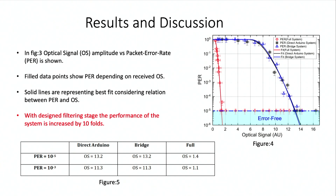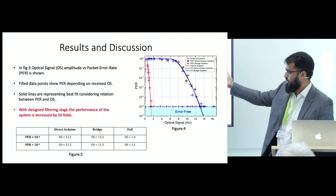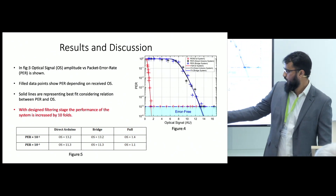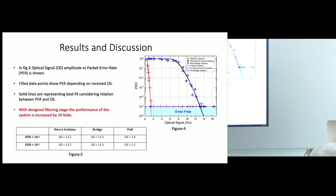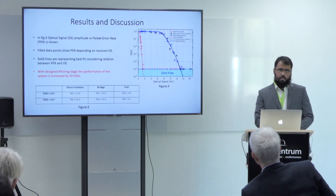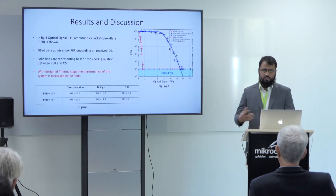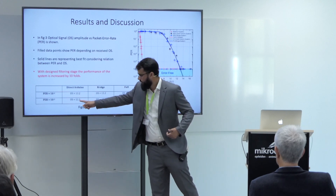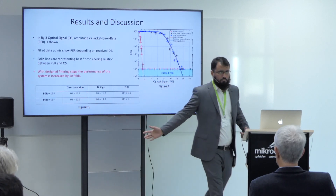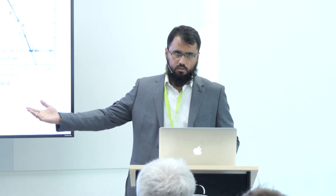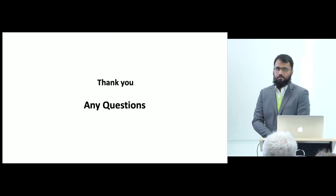Using the full system with the filtering stage and the Arduino receiver, system performance is increased by 10 folds and we need a much lower optical signal to achieve the same packet error rate. For future directions, we are testing our system directly outdoors under the sun. Two days ago we tested the system and reached up to nine meters directly under the sun at 1 p.m. with the filtering stage, compared to around 5.5 meters with the direct Arduino system. We are working at one megabaud OOK. Thank you for your attention.